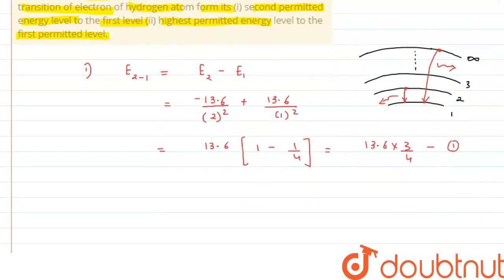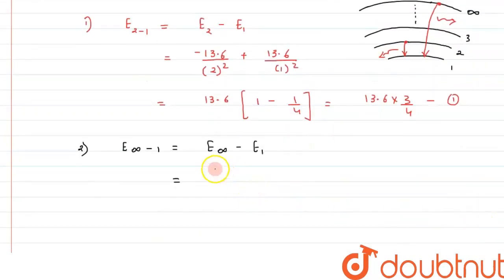In the second case, when the electron is transiting from infinity or highest energy to the first level, we can write energy associated will be infinity to 1 and it can be written as E infinity minus E1. From here, we can write minus 13.6 divided by infinity minus plus of 13.6 divided by 1, and this gives us the result as 13.6 only because this will be 0 over here. Let's say this is our equation number 2.